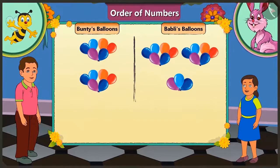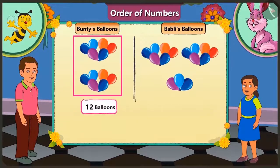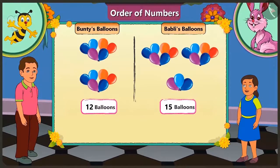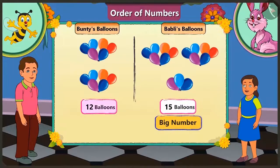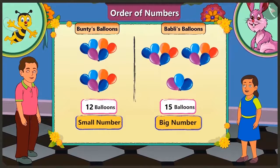Now tell me, of Bunty and Bubbly, who has more balloons? Bunty has 12 balloons and Bubbly has 15 balloons. So here Bubbly has more balloons than Bunty. 15 is a bigger number and 12 is a smaller number compared to it. Now tell me which number comes first in the order of counting — is it number 12 or number 15? While counting, 12 comes first, then comes 13, 14, 15.